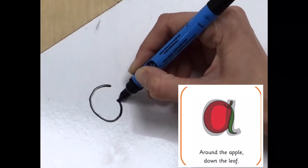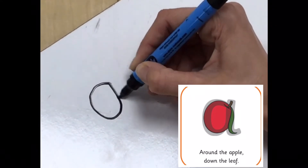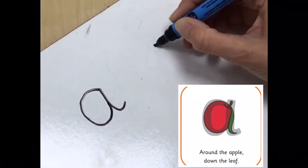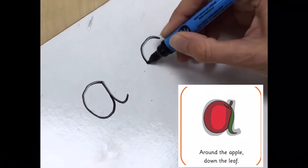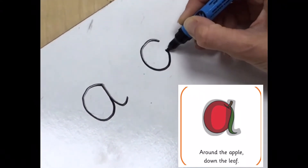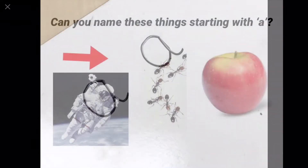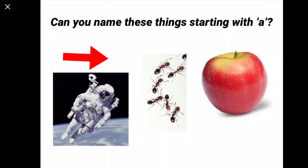Around the apple and down the leaf. Around the apple and down the leaf. What can you see here starting with A?